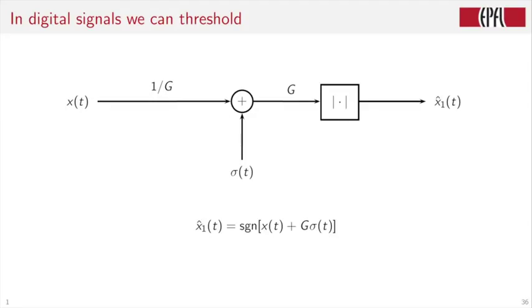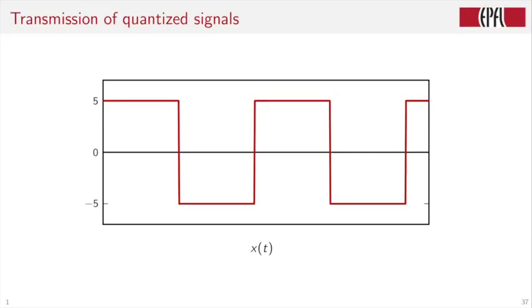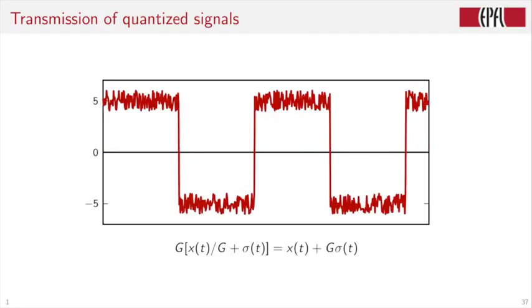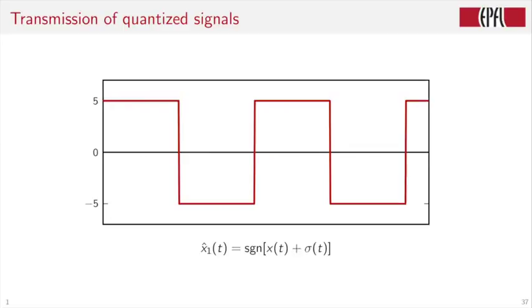In digital communication, the physics do not change. We have the same path loss, we have added noise. However, two things change. One is that we don't send arbitrary signals, but for example, only signals that take values plus 1 and minus 1, and we do some specific processing to recover these signals. Specifically, at the output of the channel, we multiply by G, and then we take the signum operation. So X1 hat is signum of X of T plus G times sigma of T. Let us again look at this in action. We start with the signal X of T that is either plus 5 or minus 5. It goes through the channel, so it loses amplitude by a factor of G, and there is some noise added. We multiply by G, so we recover X of T plus G times the noise sigma T. Then we apply the thresholding operation, and sure enough, we recover a plus 5 minus 5 signal, which is identical to the one that was sent on the channel.